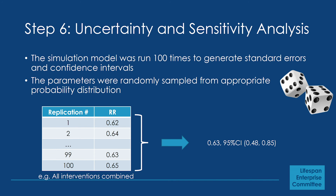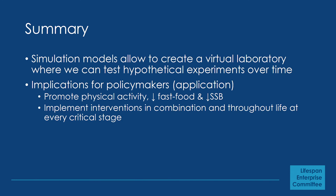In the last step, we conducted a stochastic analysis where we ran the simulation model multiple times — 100 times, given computational constraints. Across those 100 simulations, we summarized results to get a point estimate and confidence interval, quantifying our uncertainty. Each time, the parameters are sampled from appropriate probability distributions. Simulation models are very important — they allow us to create a virtual laboratory to test hypothetical experiments over time. This research shed light on the need to emphasize promoting physical activity and implementing interventions in combination throughout the life course at every critical life stage.